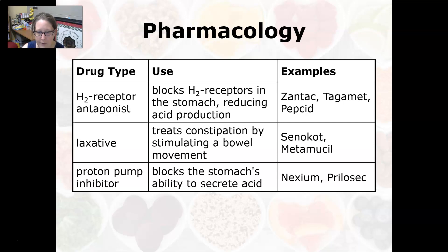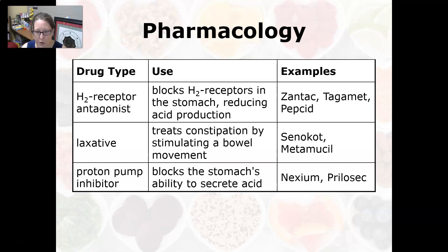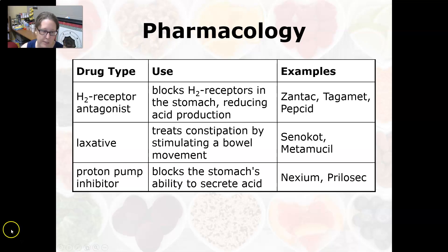A laxative treats constipation by stimulating a bowel movement, such as Senokot and Metamucil. Proton pump inhibitors, or PPIs, block the stomach's ability to secrete acid. Both H2 receptor antagonists and PPIs affect stomach acid production. Examples of PPIs include Nexium and Prilosec. That wraps up pharmacology and all therapeutics for the digestive system.